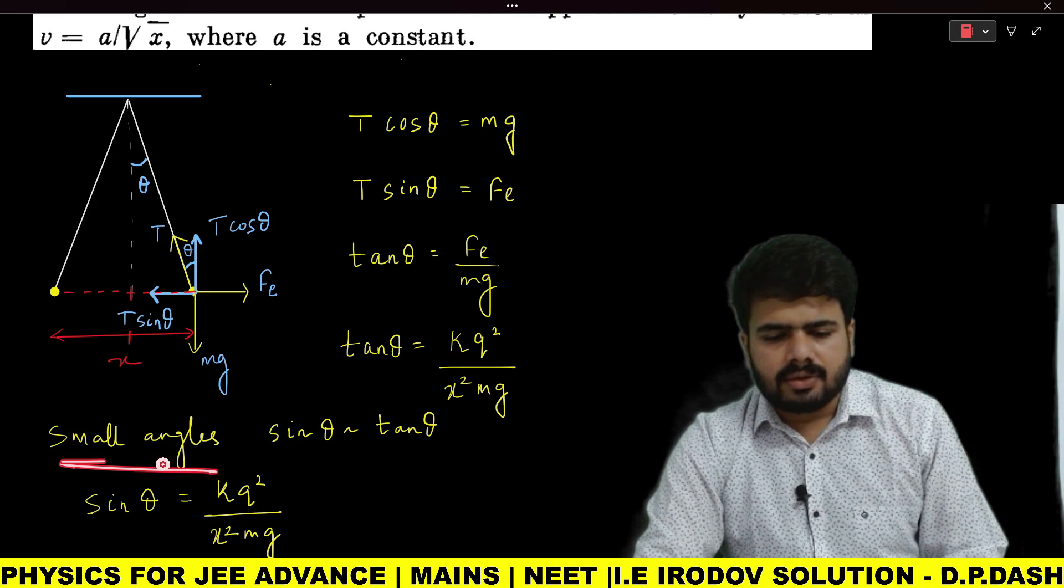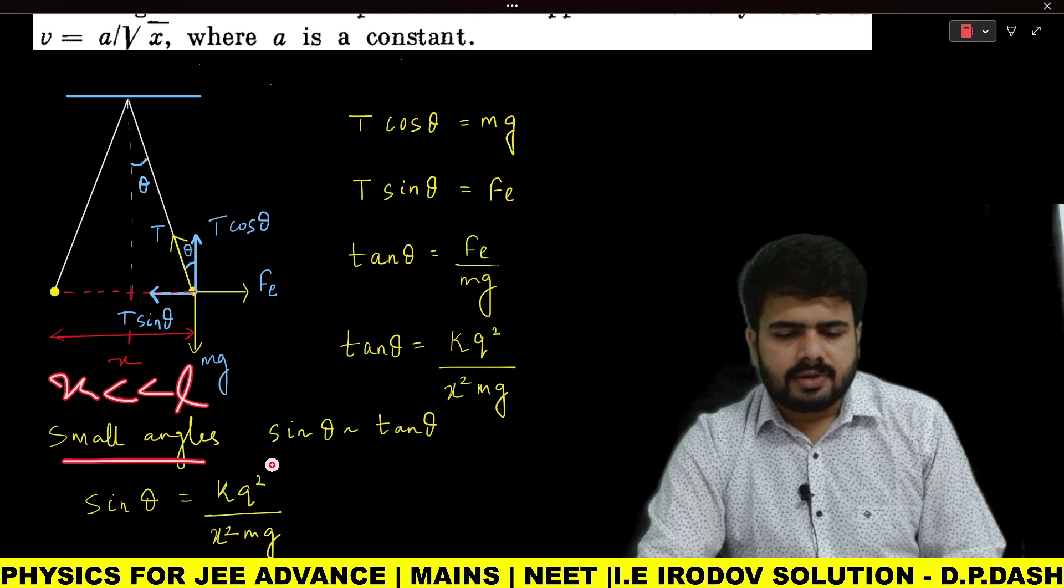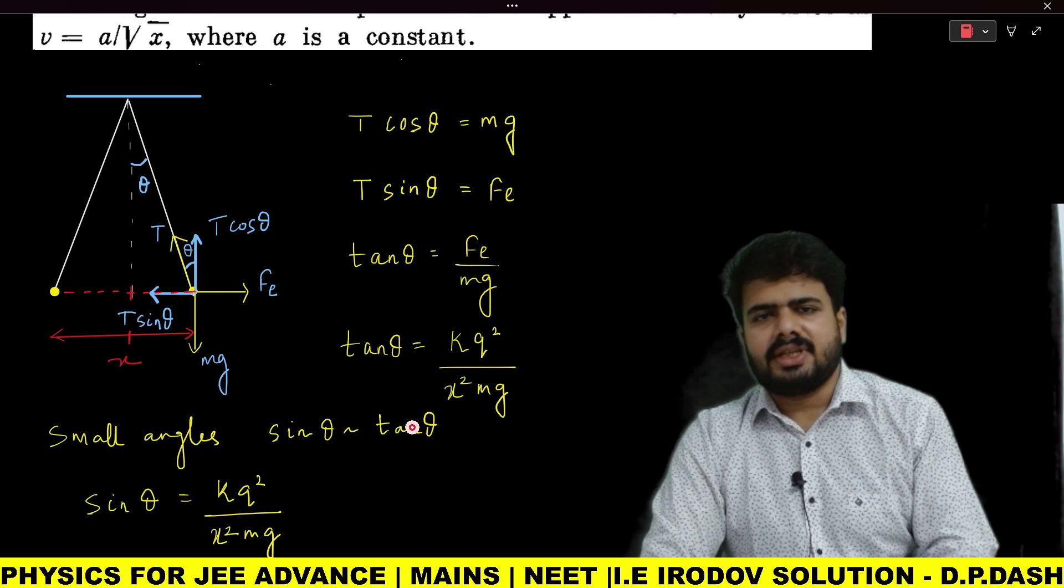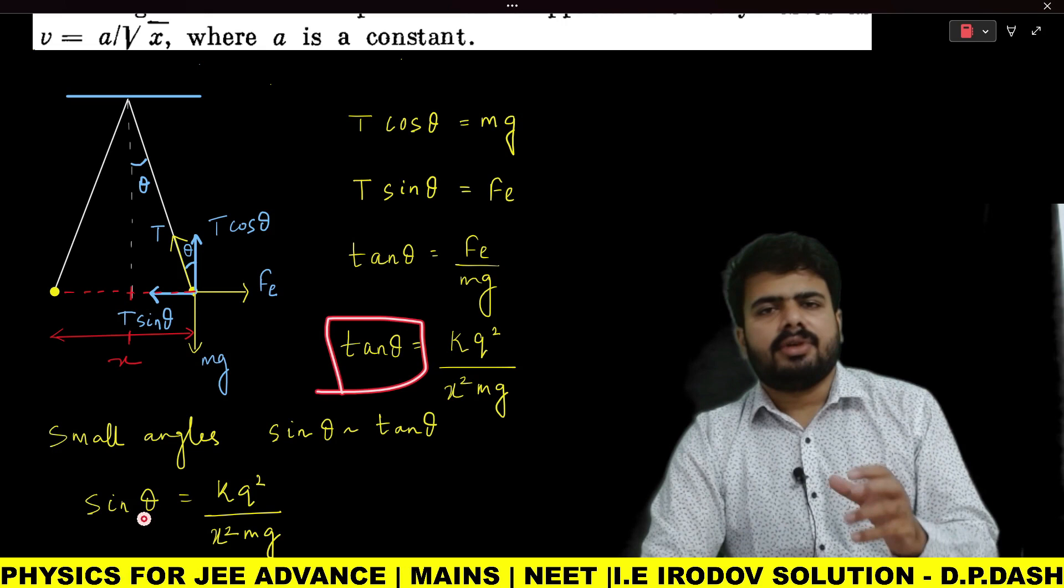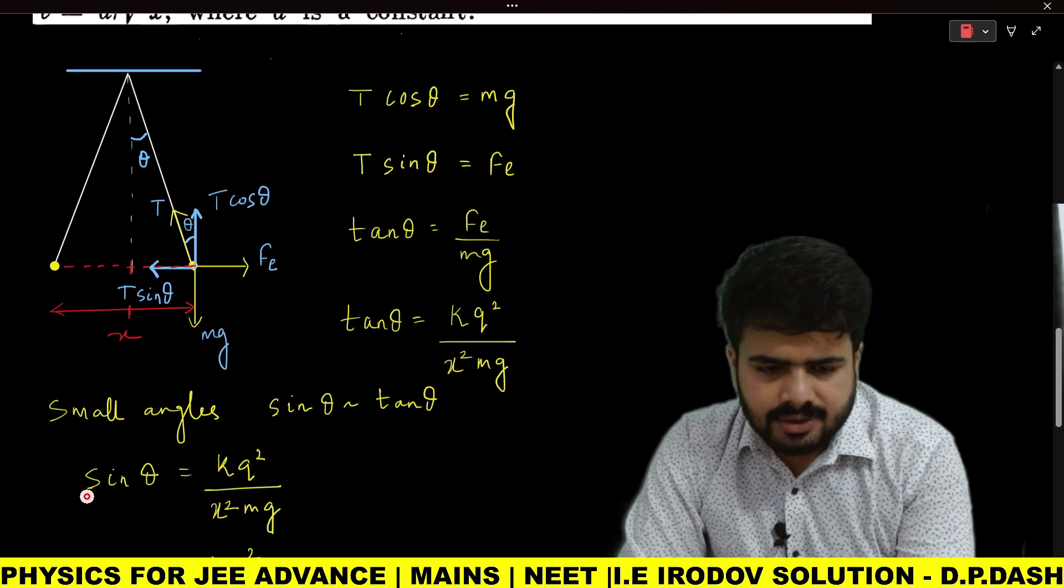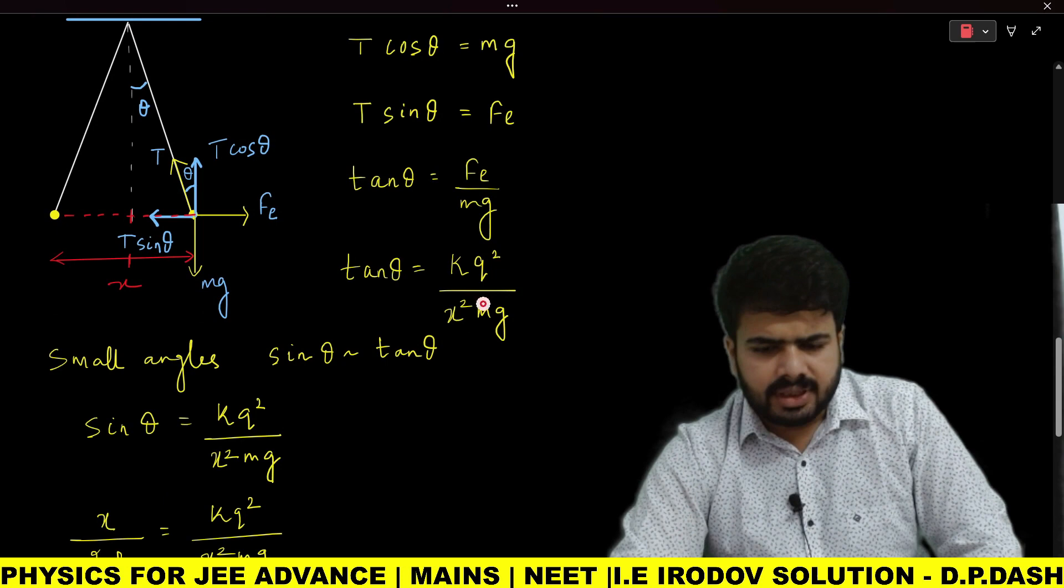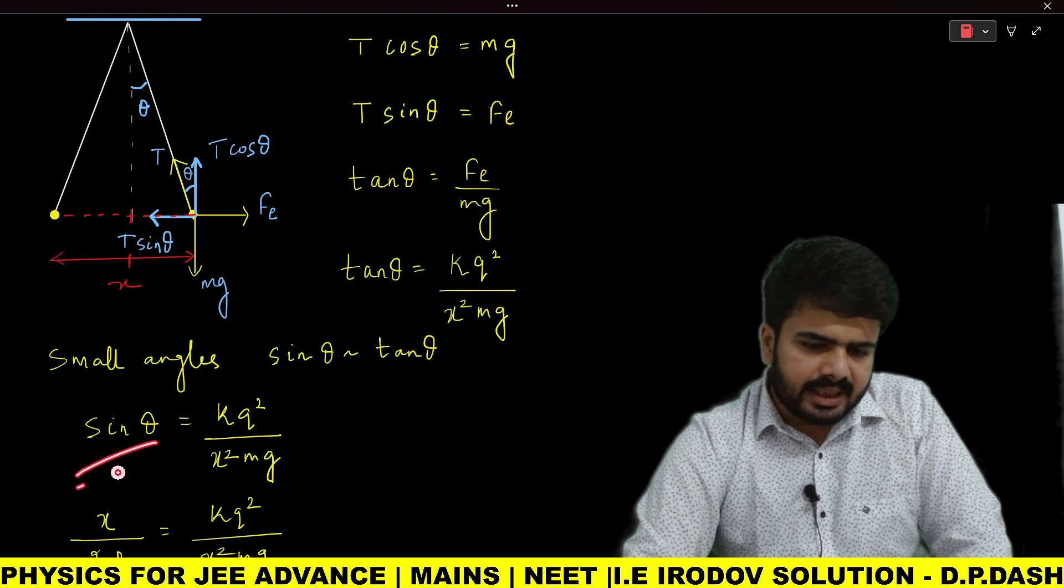In the question, they mentioned that x << l, which indicates our angle is very small. For small angles, sin θ ≈ θ ≈ tan θ. So, for small angles, sin θ equals tan θ. In place of tan θ, I am going to substitute sin θ. So sin θ = kq²/(x²mg), the same expression we have kept here.